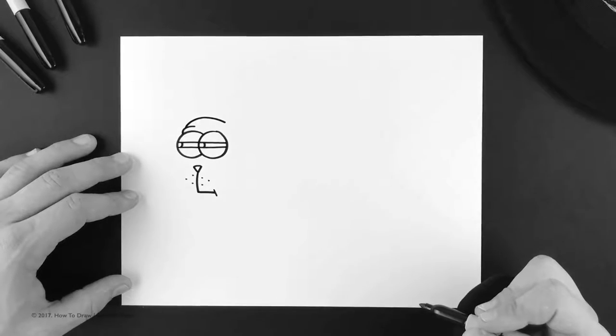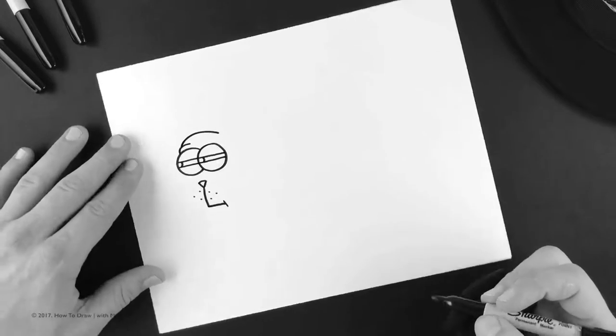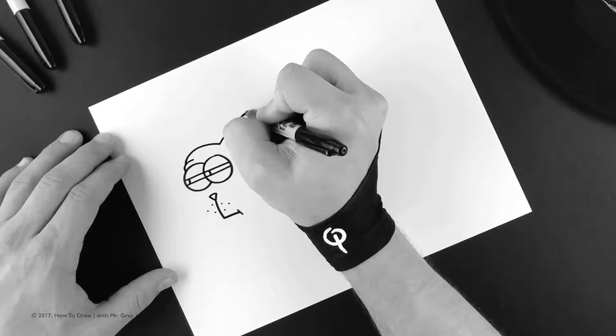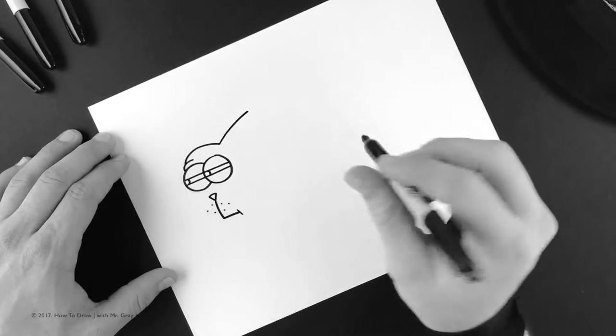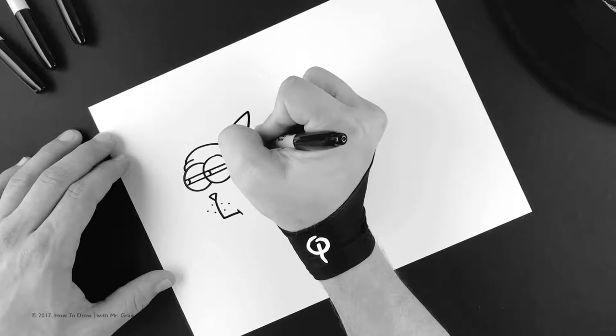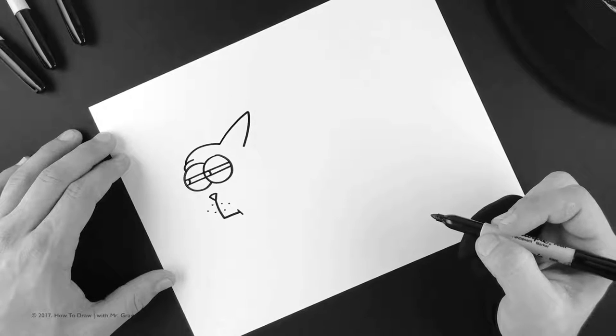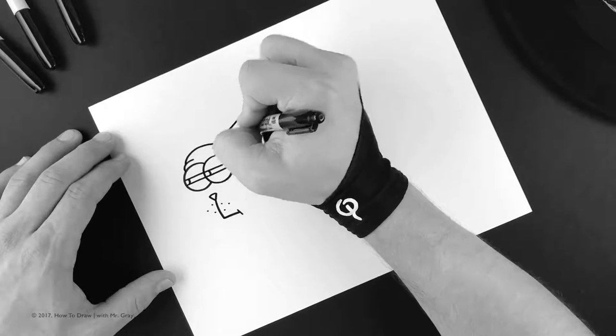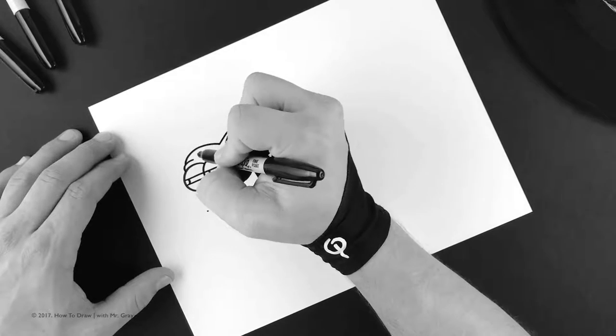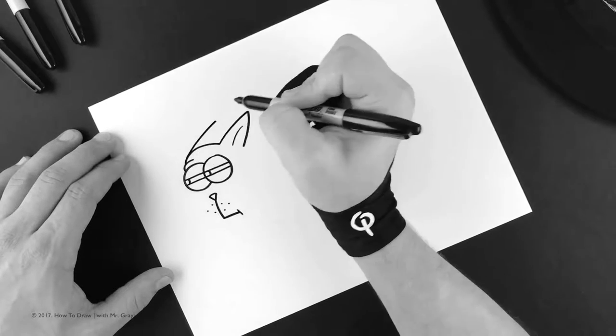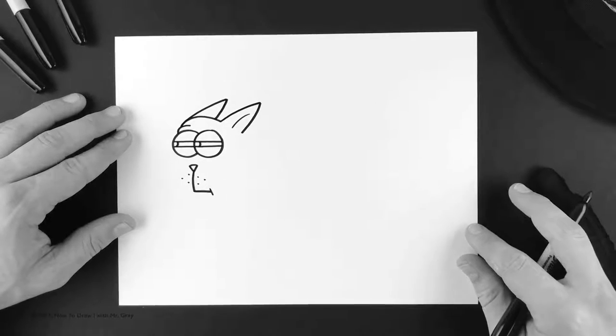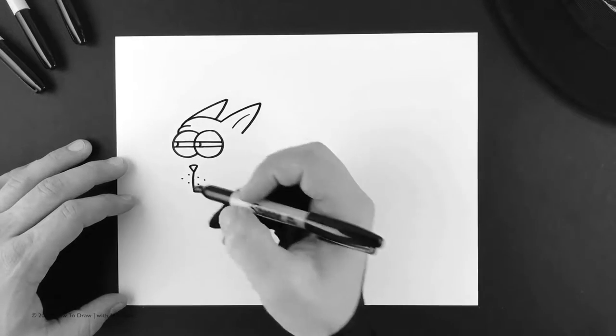Now again, he is zipping through the air, so we're gonna do pointy ears like this and have them going on an angle since the wind is pushing his ears just like that. Go ahead and put in the inside, and we're gonna do the same thing over here, just like that. Next we're gonna do